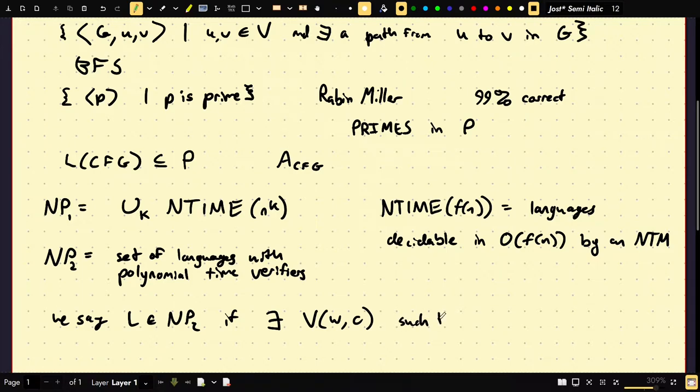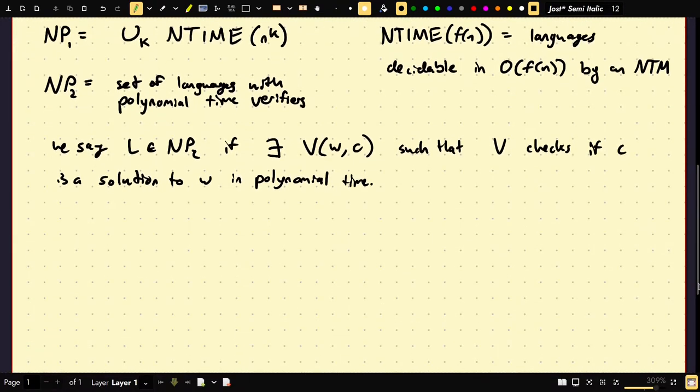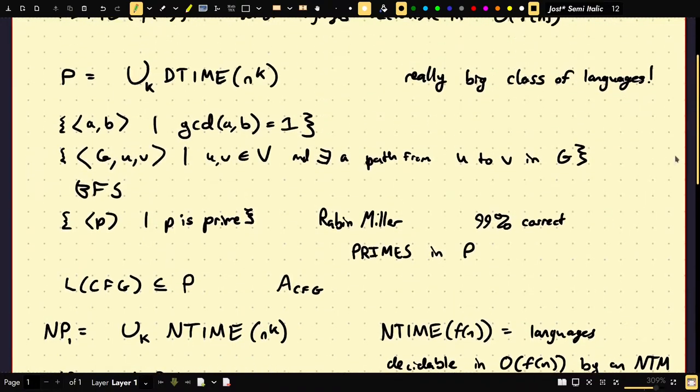We say some language L is in NP2 if there exists V, which takes as input the problem and a certificate, such that V checks if C is a solution to W in polynomial time. Another quick corollary here is C is a certificate, but C must be polynomial as well in the length of W. Why? Well, because V is polynomial time. If C, for example, is exponential in length, it's not going to be able to read the whole certificate.